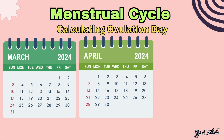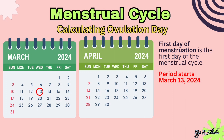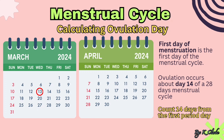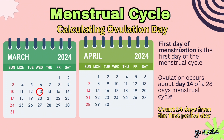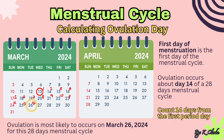Now you're going to learn how to calculate ovulation day for a specific menstrual cycle. The first day of menstruation is the first day of the menstrual cycle. We will calculate ovulation day for a female who has a 28-day menstrual cycle; her period starts on March 13th, 2024. Since ovulation occurs about day 14, you count 14 days from the first day: 1, 2, 3, 4, 5, 6, 7, 8, 9, 10, 11, 12, 13, 14. Therefore, ovulation is most likely to occur on March 26, 2024.